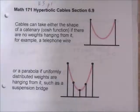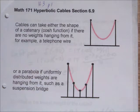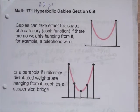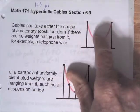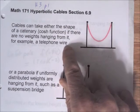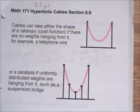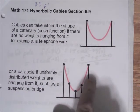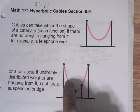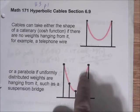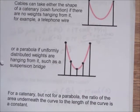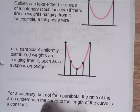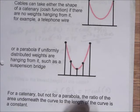I want to go over some applications — applying the hyperbolic functions to cables. Cables can take the shape of the cosh function; it's called the catenary. If there are no weights hanging from it, for example a telephone wire, the shape is a catenary. By contrast, if there are uniformly distributed weights hanging from the wire, the shape is a parabola. They look very similar and it's hard to tell just by looking, but the formulas are different. Also, the catenary has a special property — not true for a parabola — that the ratio of the area underneath the curve to the length of the curve is a constant.